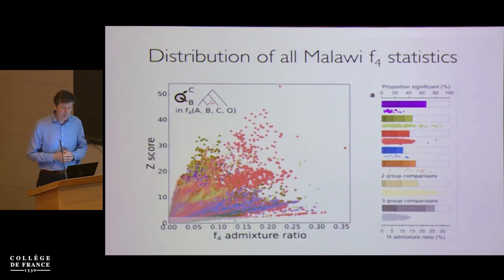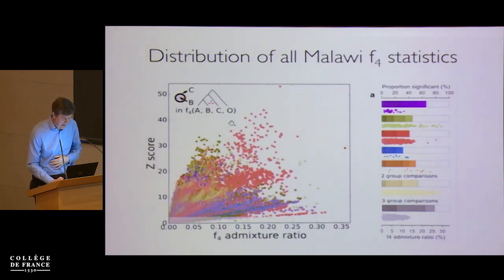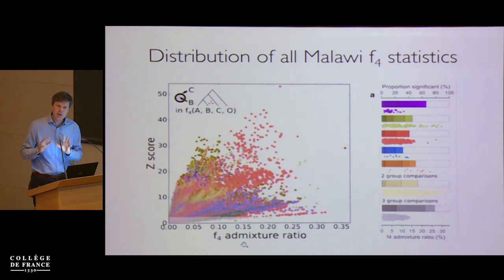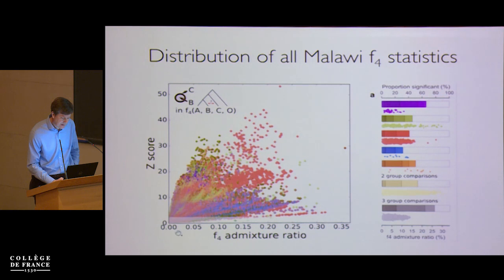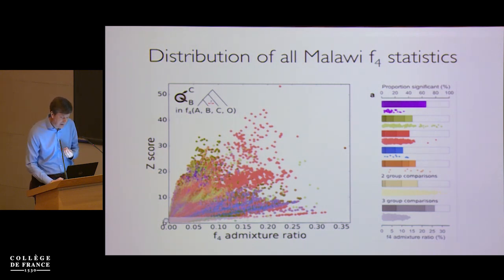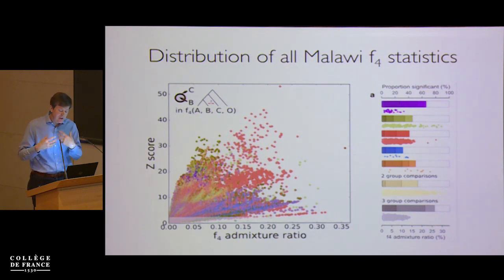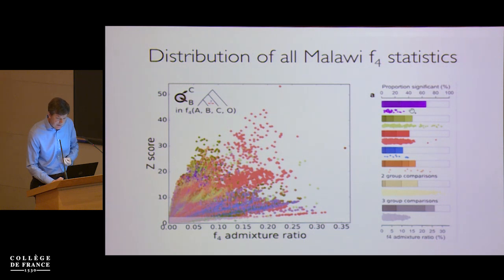When we apply this to Lake Malawi, using a Tanganyika cichlid as the outgroup, we get a huge slew of very strongly significant results, including quite significant admixture ratios. Under a pure ILS model you would essentially have none of this, so it's clear there's been a lot of population structure or gene flow — happening both within groups and also between groups.